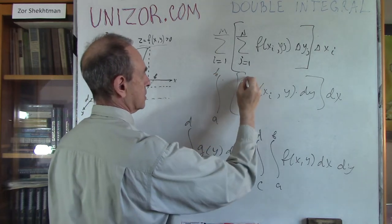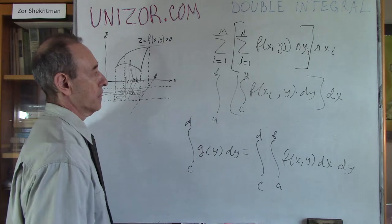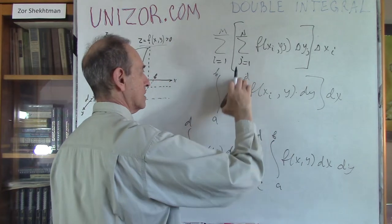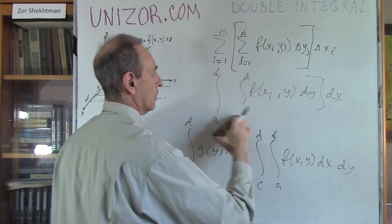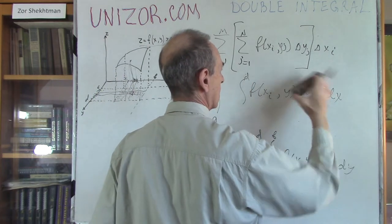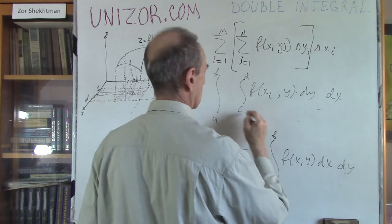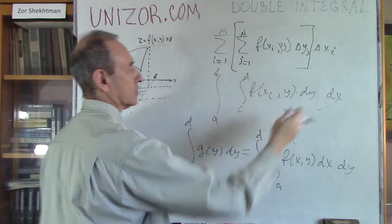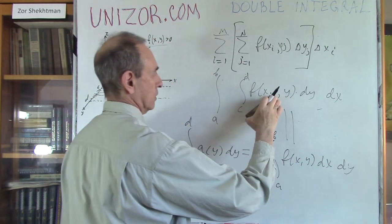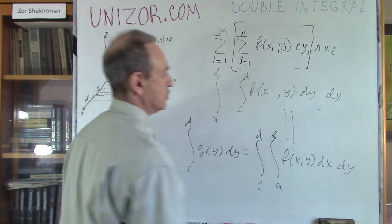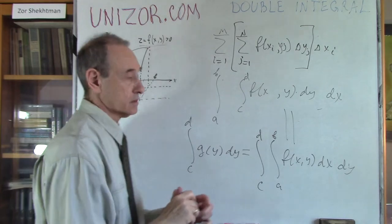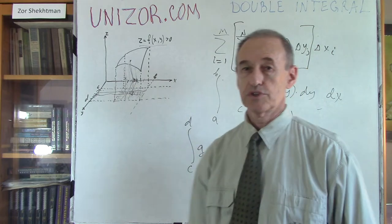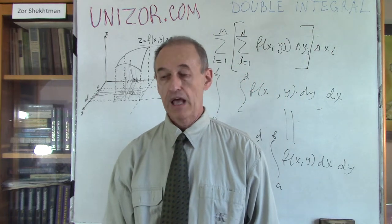This integral from c to d by y is exactly the same as before. So that's why I can get rid of the brackets — the two forms are exactly the same. I changed the order of integration and got exactly the same result, which is the volume under this particular surface.